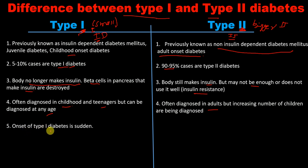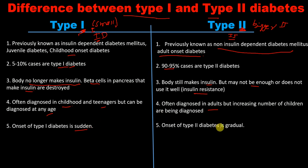The next difference is onset: the onset of type 1 diabetes mellitus is sudden, whereas the onset of type 2 diabetes mellitus is gradual.